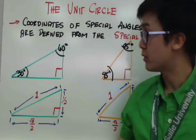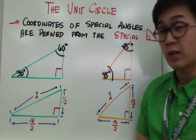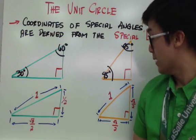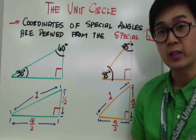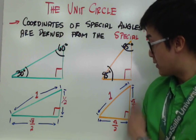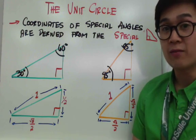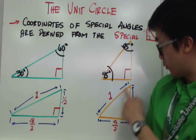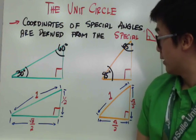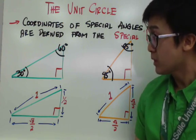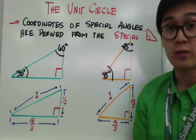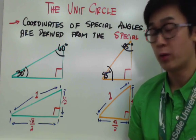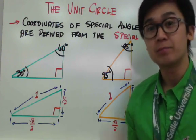The second special right triangle is the 45-45-90 degree triangle. Since a 45-45-90 degree triangle is an isosceles triangle, the legs will have the same measurement, which is square root of 2 over 2 and square root of 2 over 2. The hypotenuse of this triangle will also be equal to 1, following the measurement of the unit circle with radius 1 unit.